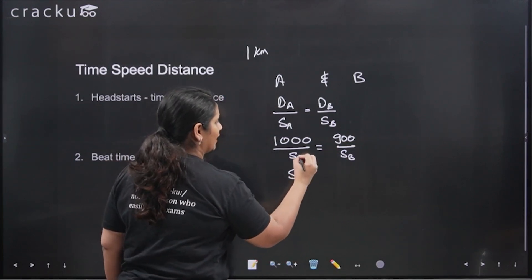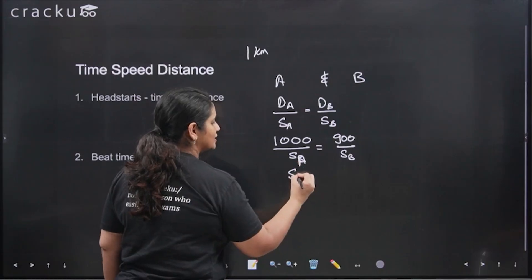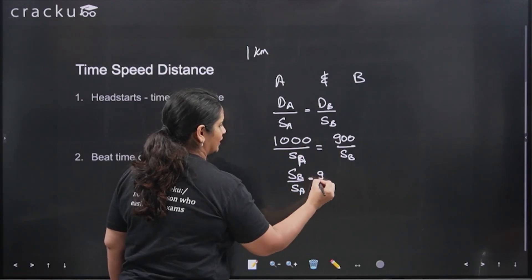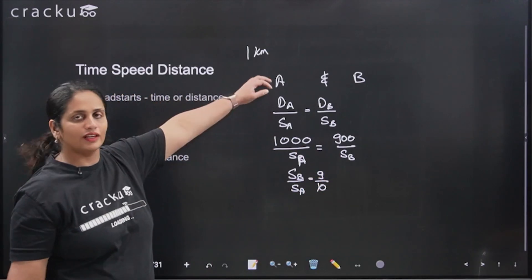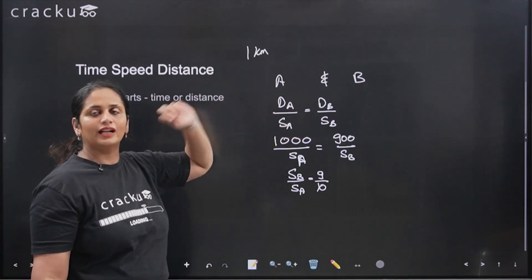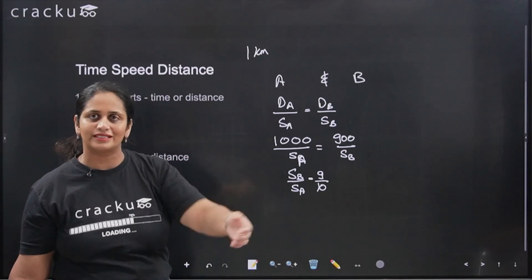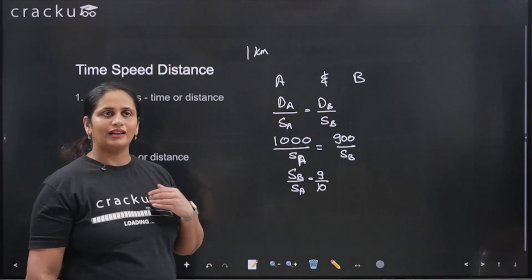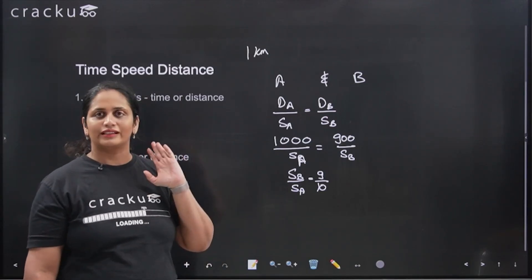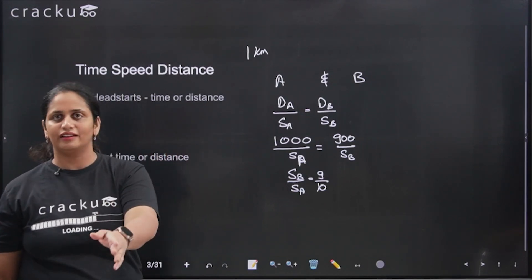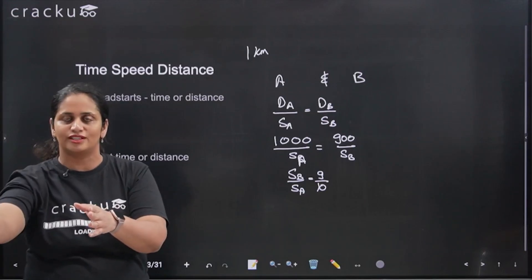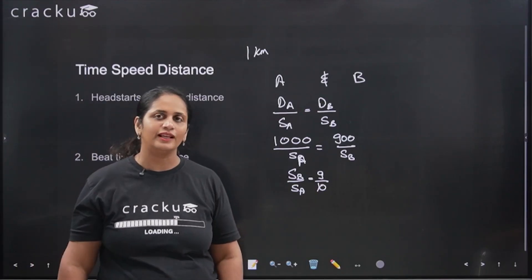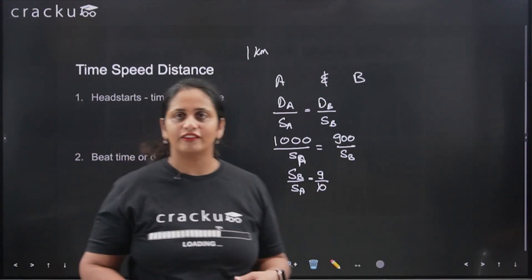Since it is a question of constant time, distance covered divided by speed must be equal for both. So the ratio of speed of B to speed of A is 900 by 1000, which is 9 by 10. Whenever a head start distance is given and they reach the finish line at the same time, it becomes a constant time problem: distance of A divided by speed of A equals distance of B divided by speed of B.